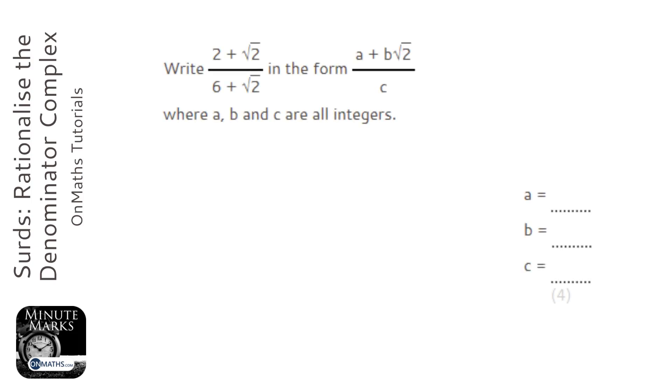Okay, what you'll notice with this one is the form it wants us to write this in doesn't have a surd at the bottom. So this is what's called rationalizing the denominator. Now this is quite a complex question because we have two terms at the bottom.